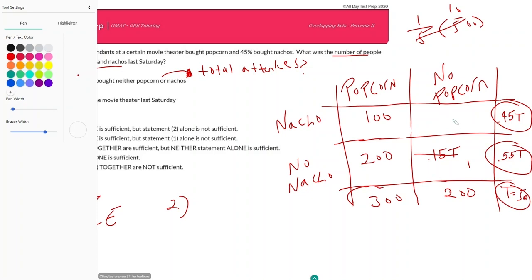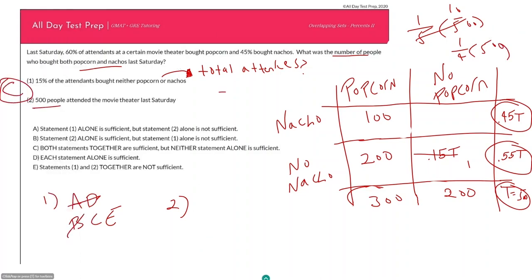What is this number here? So 25 percent, that's going to be one fourth of 500. What is that? What is 500 over four? 125, so 125 here, which means 75 here.